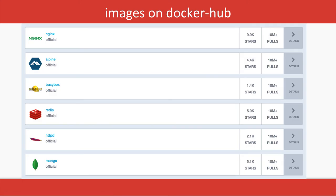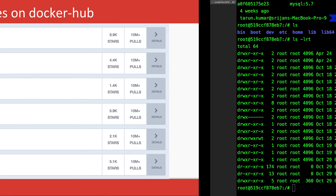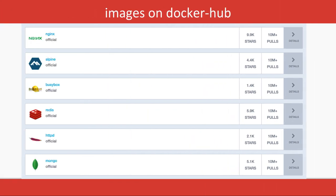If you go to Docker Hub, you'll see a list of all available images. Docker Hub lists all official images like Nginx, Mongo, BusyBox, and Alpine. You can directly pull these official images, or you can create your own image by starting from a base image and installing your application on top of it.